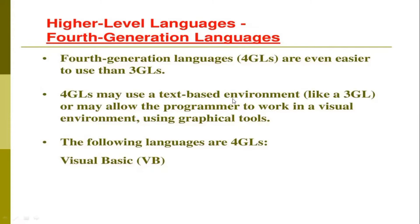It will be easier to understand. Fourth generation languages also allow the user to work in a visual environment using graphical tools — like Photoshop, for example. In Photoshop you can see there are already predefined tools and shapes — you can use rectangles, transitions, and other graphical tools that are already present for the programmer or designer to use. So we can say that the fourth generation language is basically either text-based or more graphical in nature.